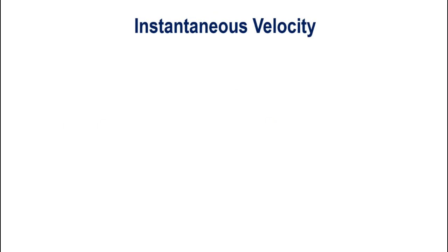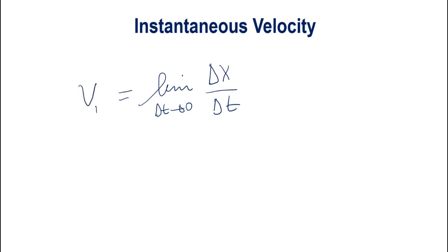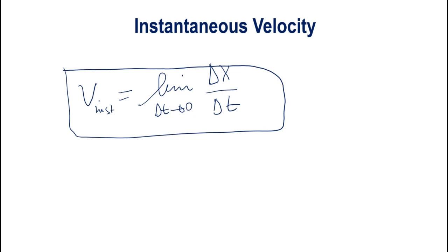The instantaneous velocity is the average velocity when the time interval is infinitesimally short. It is the limit as delta t goes to zero of delta x over delta t. For those in calculus-based physics, we will solve more problems using this. For basic physics, I won't go into full detail here, but I will add another video about instantaneous velocity.